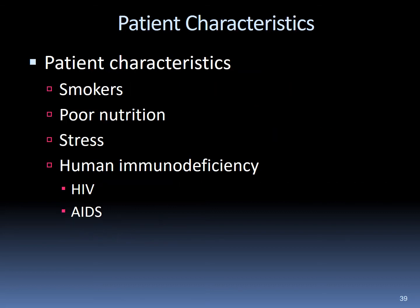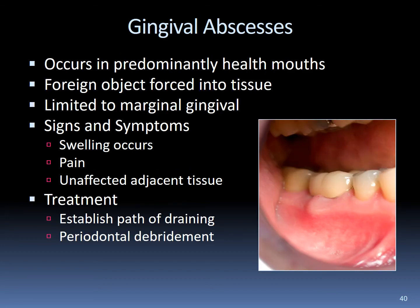Patient conditions can lead to impaired wound healing or aggravate periodontal abscess formation, including smoking, poor nutrition, stress, and autoimmune diseases such as HIV and AIDS. Gingival abscesses occurring predominantly in healthy mouths are attributed to foreign objects forced into gingival tissue. They are limited to the marginal gingiva with signs and symptoms of swelling and pain, and do not usually affect adjacent tissue. Treatment involves establishing a path of drainage and periodontal debridement.